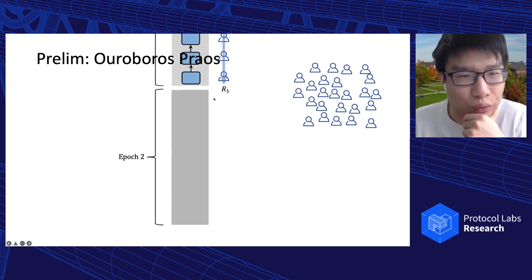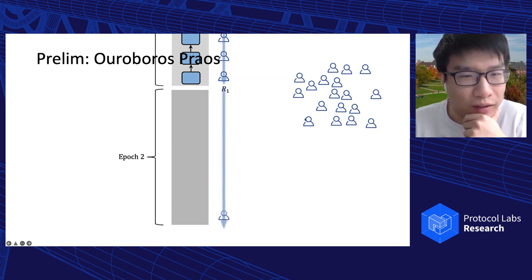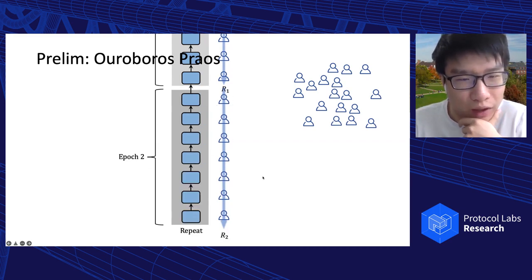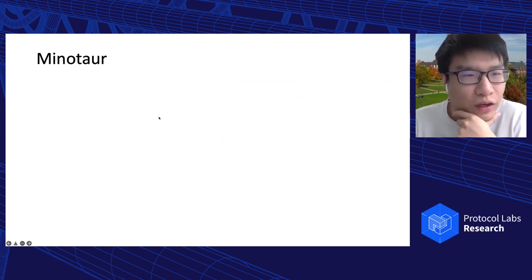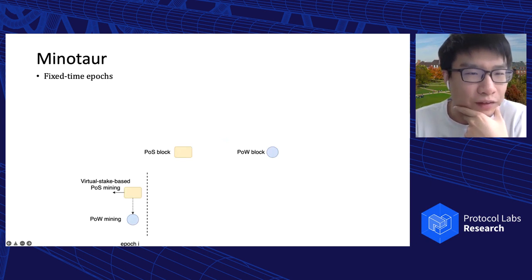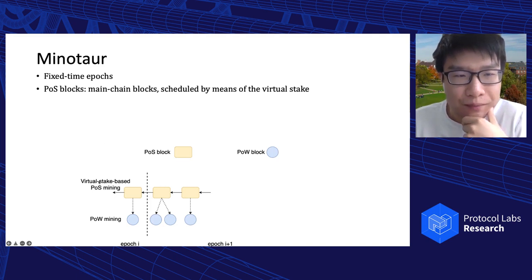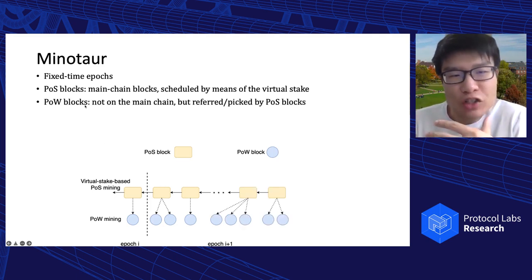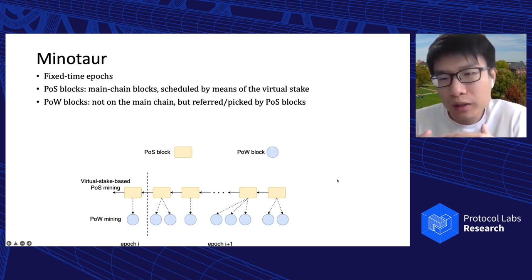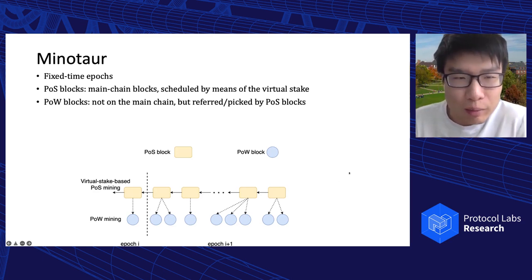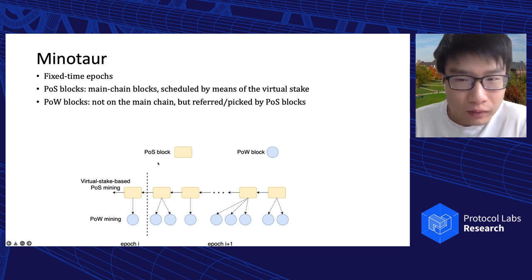Following the underlying PoS protocol, Minotaur also has fixed-time epochs. The PoS blocks in Minotaur are the main chain blocks, but they are scheduled by means of the virtual stake. The PoW blocks are not on the main chain but are referred to or picked by the PoS blocks. This is similar to the Fruitchain structure — the PoW blocks in Minotaur are fruits hanging on the main chain.